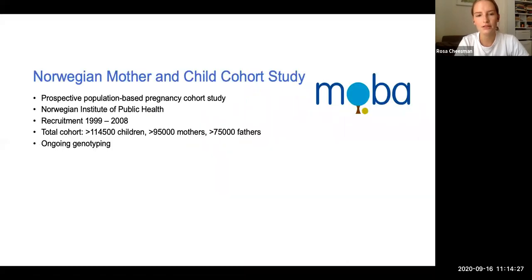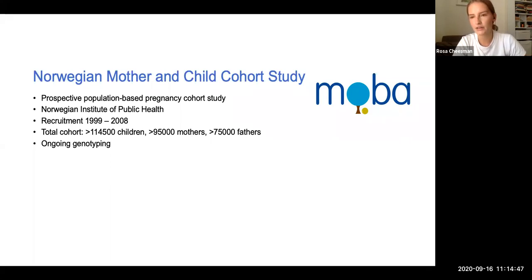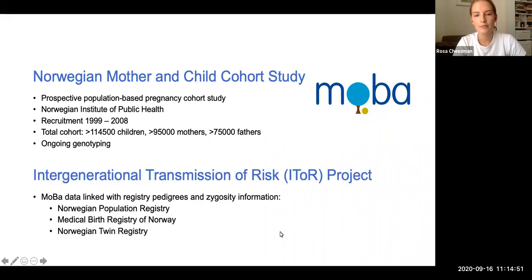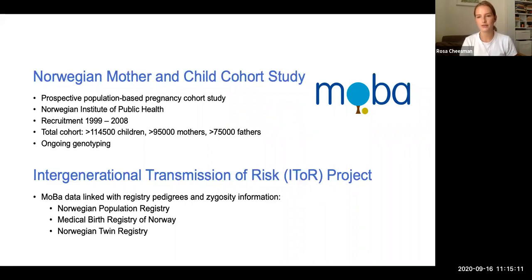I implemented this model in the Norwegian Mother and Child Cohort Study — a huge cohort study with genotyping ongoing. I used the interim release, which includes around 98,000 genotyped individuals in total. Because my supervisor's sub-project linked the MOBA data to national Norwegian registry information on twin zygosity, I was also able to run a pedigree model — the first time this RDR model has been directly compared to a more classic approach without using genotype data in the same sample.